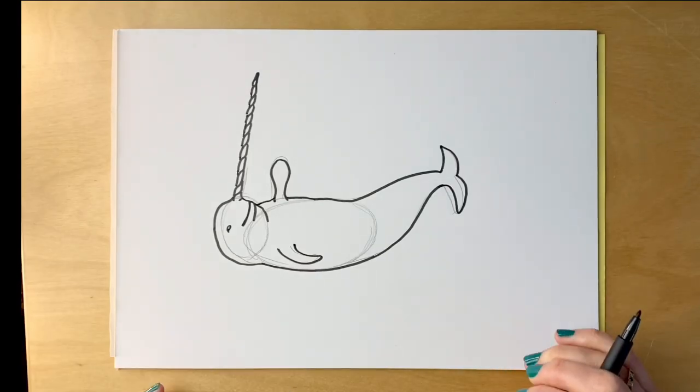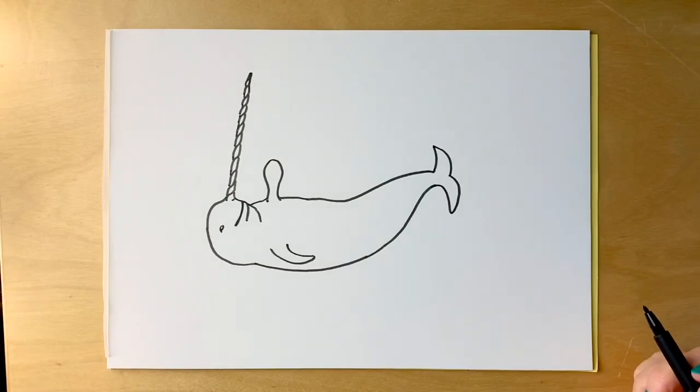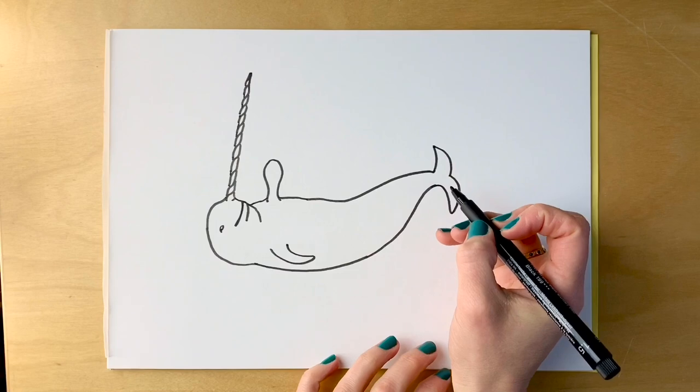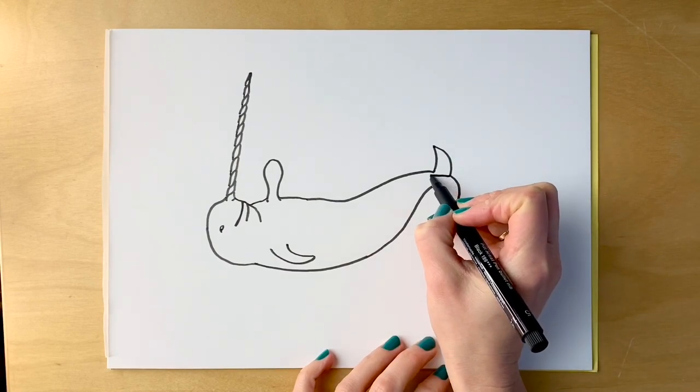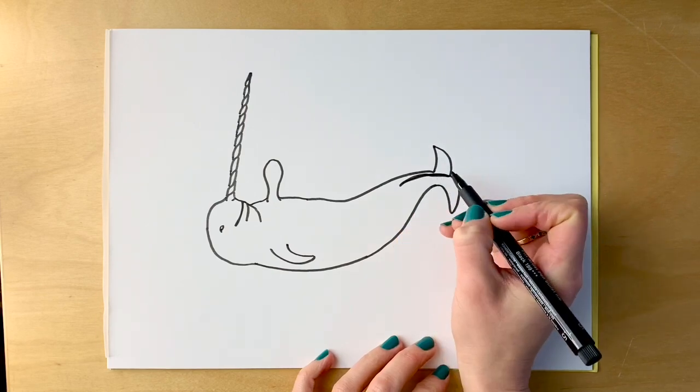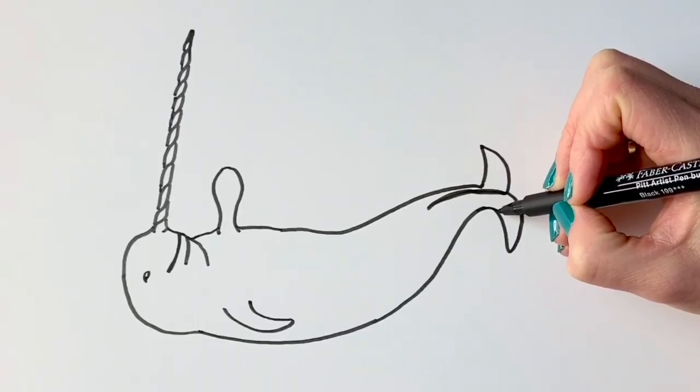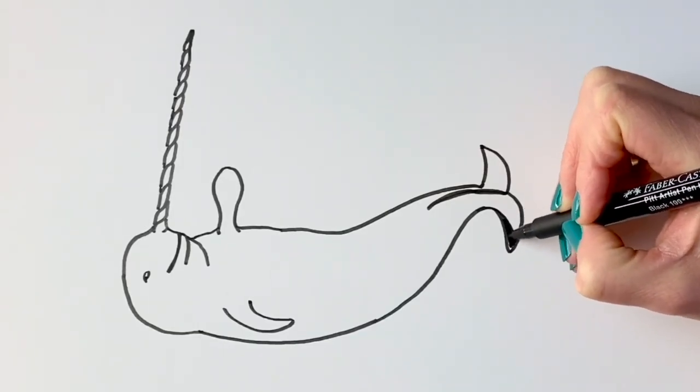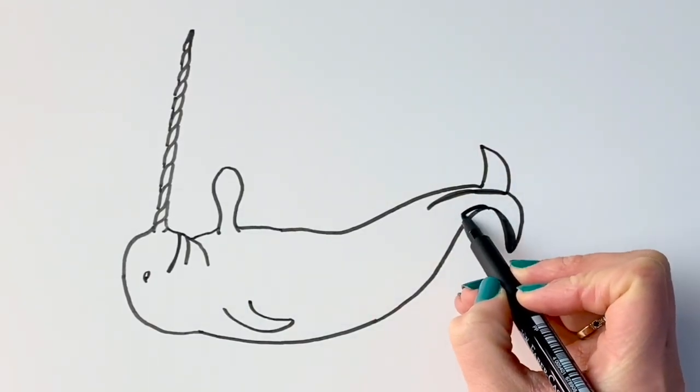If you haven't gone over it in pen already, go over it in pen, and then we're going to erase all the pencil marks. Now to add some details. We're going to be adding some details to the tail, just a line coming down like that. I'm then going to be adding a little bit of shadow just underneath here. I'm just going to color that in black, and then around here as well.